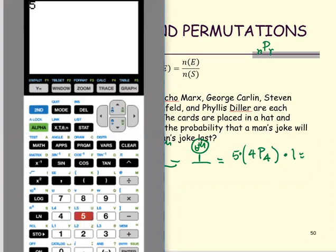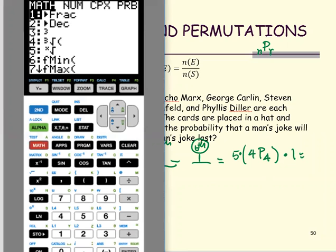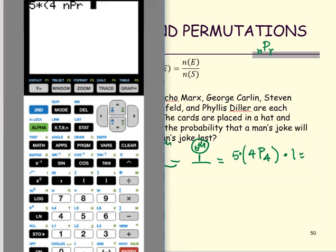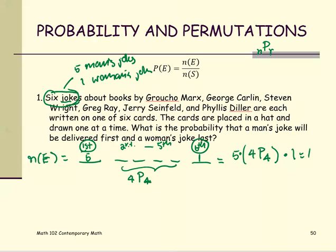Type the number five, multiply by the parentheses. This is four items, and then select the math button, move the cursor to PRB, select option two, and the R will be four. Close and then multiply by one. Enter. So we get 120 permutations for this event.